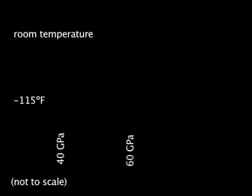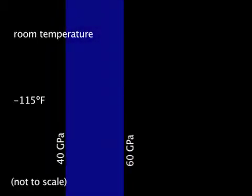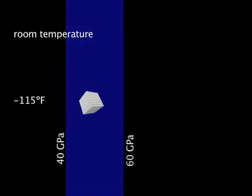At pressures ranging between about 395,000 atmospheres or 40 gigapascals and about 592,000 atmospheres or 60 gigapascals, not only does it become a liquid at room temperature, but it then refuses to freeze until the temperature reaches a chilly minus 115 degrees Fahrenheit.